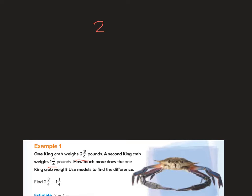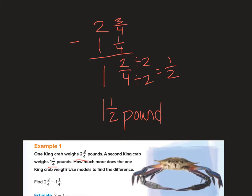So we're going to do the same way as we do adding, 2 and 3 fourths minus 1 and 1 fourth. 3 fourths minus 1 fourth is going to give us 2 fourths. 2 minus 1 is going to give us 1. Then I need to simplify my fraction, and I'm going to get 1 half. So my final answer is going to be 1 and 1 half pounds is the difference between one king crab and the other king crab.